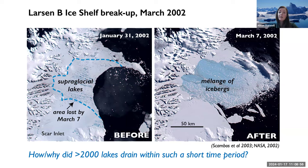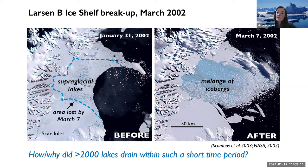From observations of this event, it seems surface melting, lake formation, and drainage can be very dangerous for ice shelves. Although it had been hypothesized by Ted Scambos and others that lake drainage occurs by hydrofracture, it wasn't clear why all these lakes drained in such a short period of time. This was the question that colleagues and I investigated via modelling studies over the last decade.